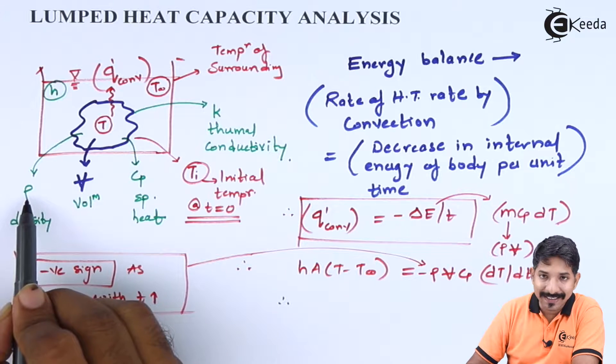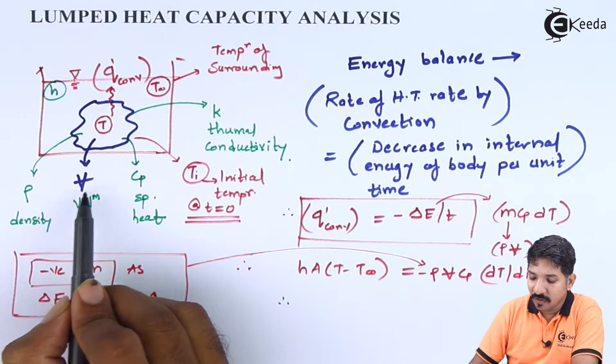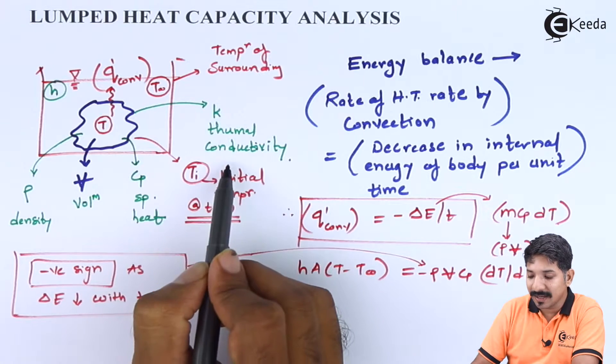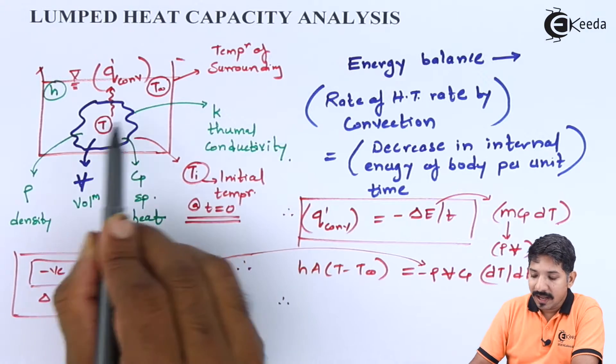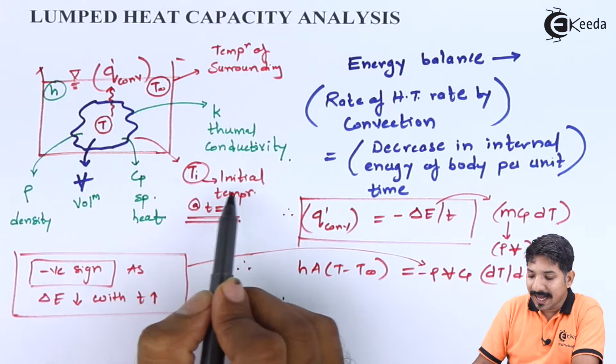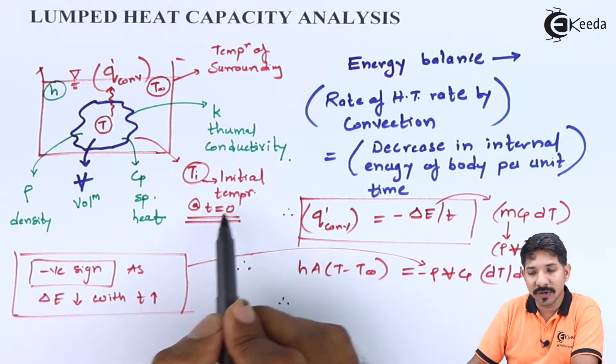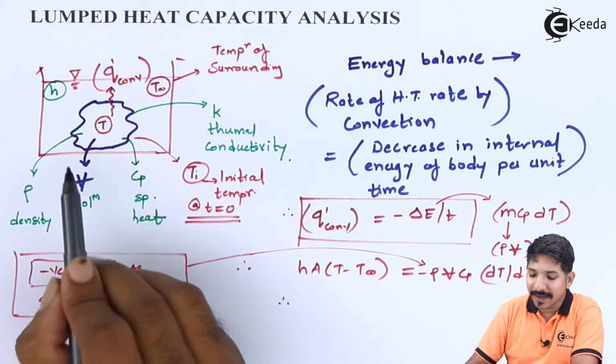Now let us say rho is the density of a given body, V is the volume, Cp is the specific heat, K is the thermal conductivity of the given body, and Ti is obviously the initial temperature of a given body when T is equal to 0. Now with this thing in our mind,